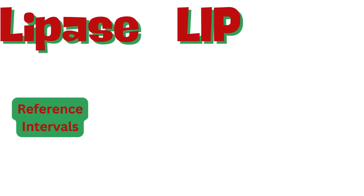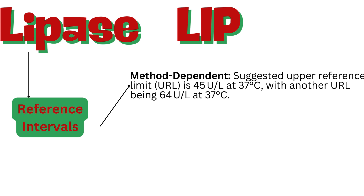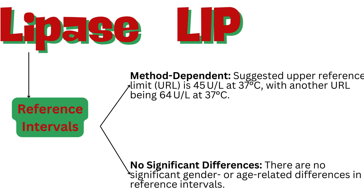Reference intervals for lipase activity can vary and are method-dependent. The suggested upper reference limit is 45 units per liter at 37°C, with another URL being 64 units per liter at 37°C. There are no significant gender or age-related differences in reference intervals.